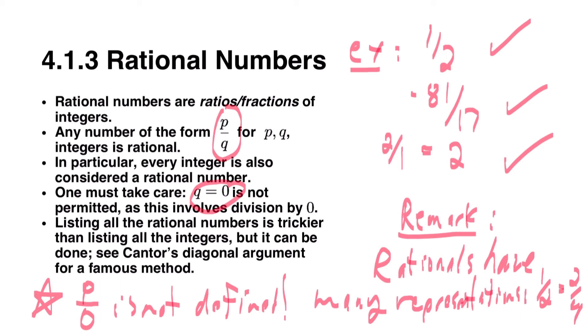An interesting mathematical tidbit is, although it seems like there should be more rational numbers than integers, there's a very famous and controversial mathematical theory that says that this is not the case, that there are the same number of integers as rational numbers.